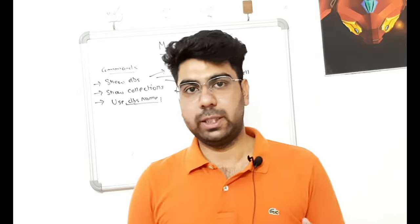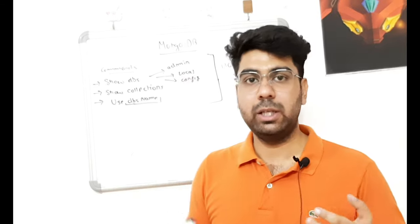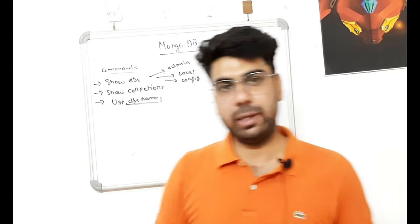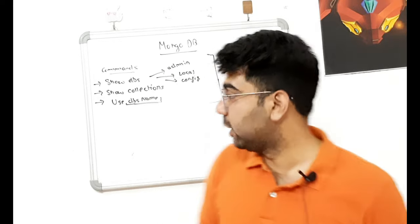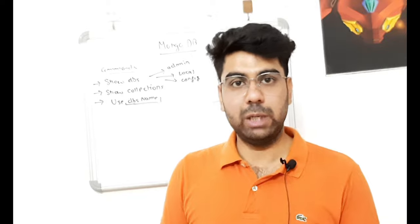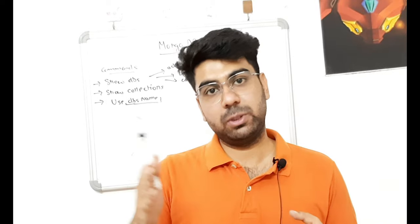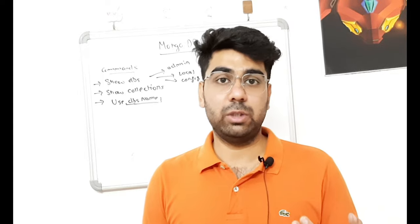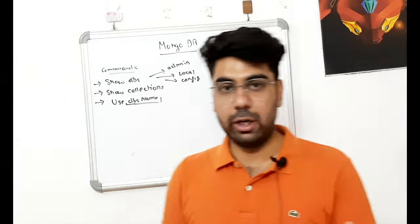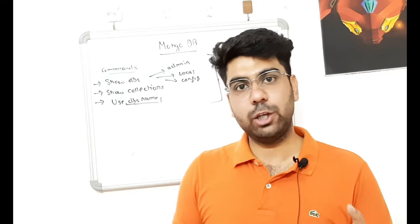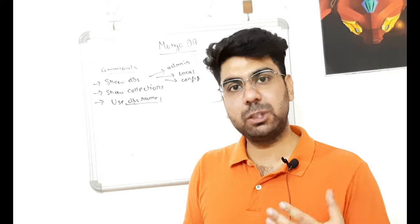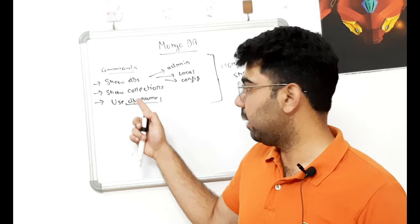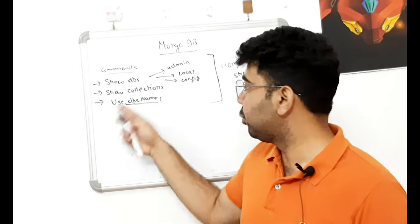Now let's discuss some commands in MongoDB. We use Mongo Shell, which is the MongoDB command prompt, to write our commands and deal with our data — basically CRUD operations. The first command is 'show dbs'. It shows all the databases present in your MongoDB. There are three default databases: config, admin, and local — which are always present in MongoDB. If you have created a database, it will also appear. Then there is 'show collections'.